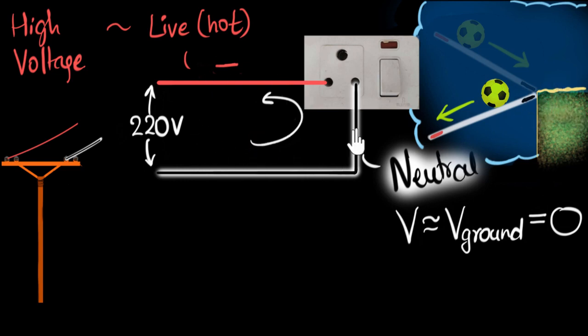On the other hand, the other end is like the neutral wire. It's always having the same voltage as that of the ground. Does that make sense?